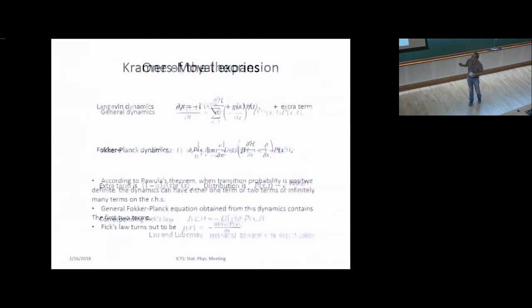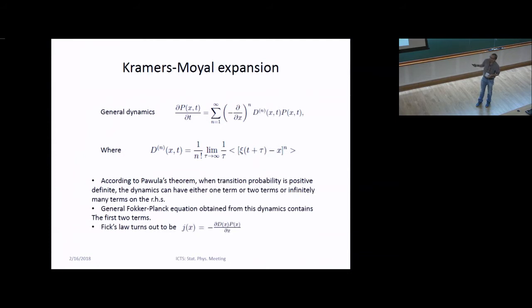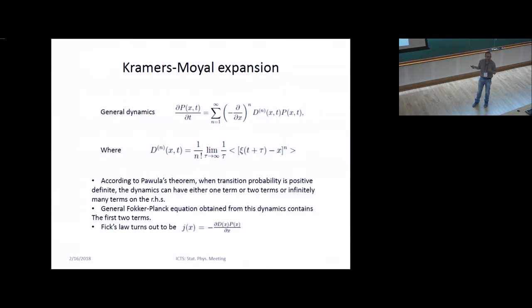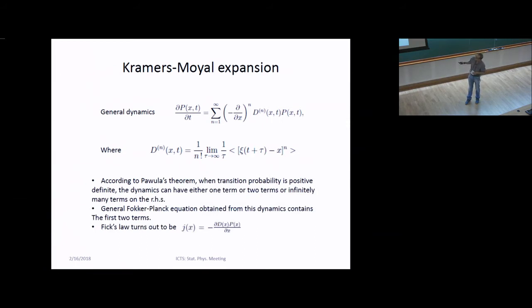Let us look at the standard Kramers-Moyal expansion. The kind of dynamics the Kramers-Moyal expansion gives has infinitely many terms on the right-hand side. Pauli's theorem tells us that if we want to keep the transition probability positive, on the right-hand side we must take either one term, two terms, or infinitely many terms — we cannot take three, five, or some other finite number. So the Fokker-Planck equation normally obtained contains two terms: the drift term and the diffusion term. These are the moments, the D_n, and when you evaluate these moments using stochastic integrals, the spurious current problem appears.